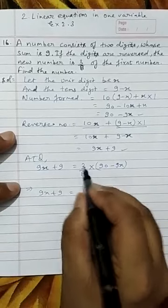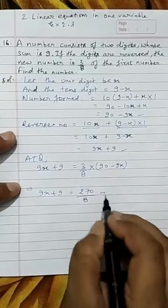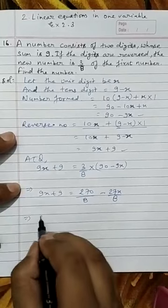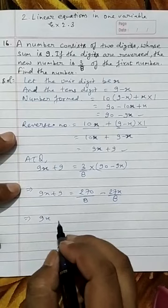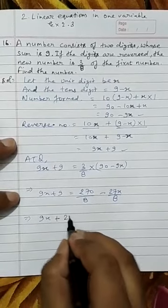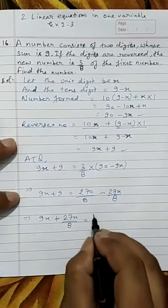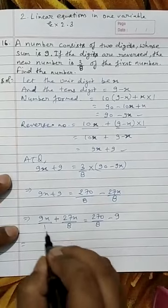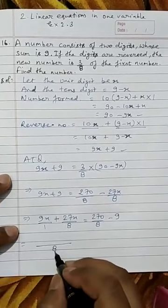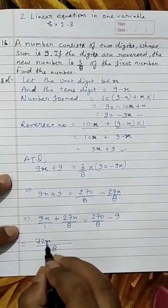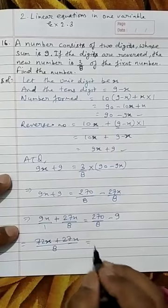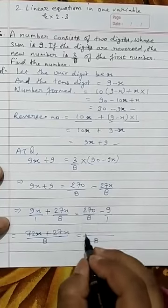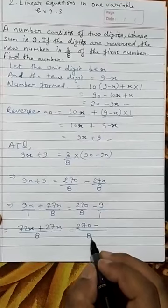So 9x plus 9 equals 3/8 of (90 minus 9x). Cross multiplying: 8 times (9x plus 9) equals 3 times (90 minus 9x), giving 72x plus 72 equals 270 minus 27x. Bringing the x terms together, 27x comes to the left-hand side as positive, and 9 transfers to the right-hand side. Taking LCM of 1 and 8, we get 270 minus 72.